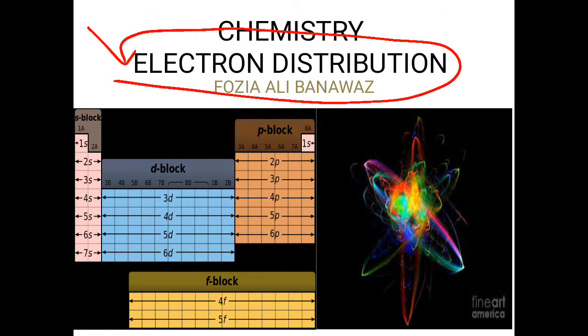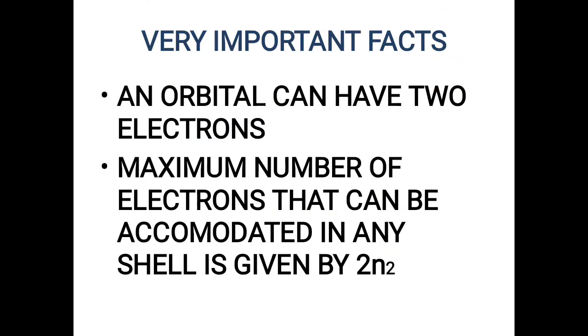So we go ahead. Now we have to remember two facts: an orbital can have two electrons and the maximum number of electrons that can be accommodated in any shell is given by the formula 2n².